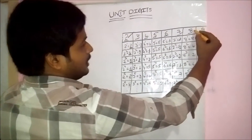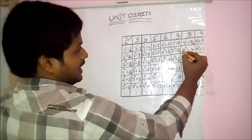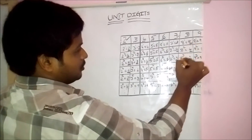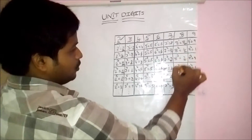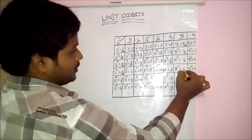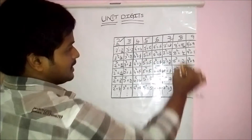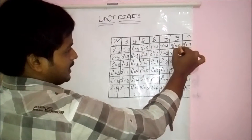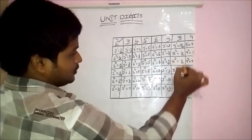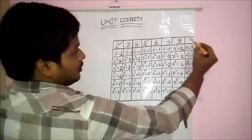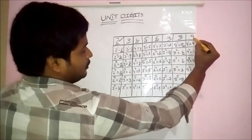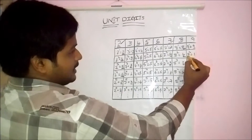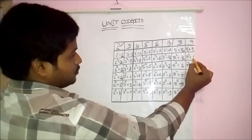Look at 8 carefully. 8 power 1 is 8, 8 squared is 64 — unit digit is 4, 8 cubed unit digit is 2, 8 power 4 unit digit is 6. It repeats from 8 power 5: 8 again. That means the cycle is 8, 4, 2, 6.